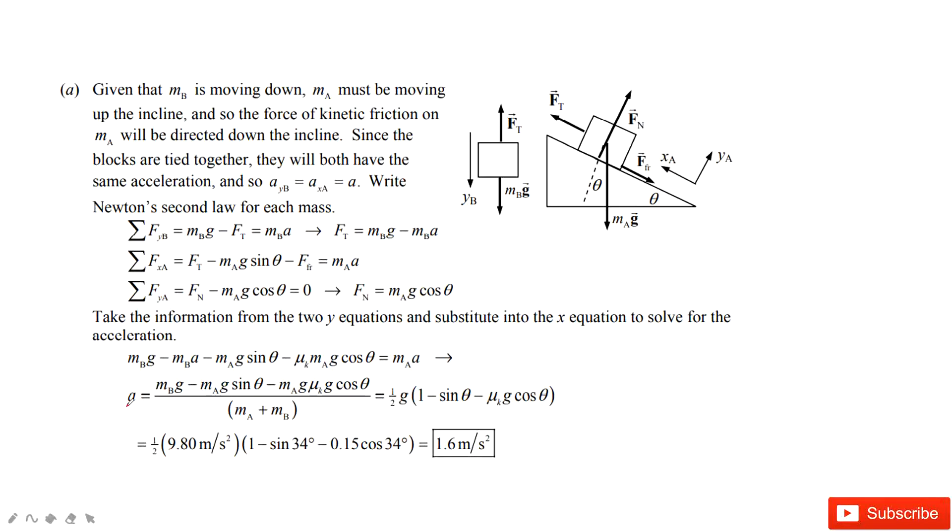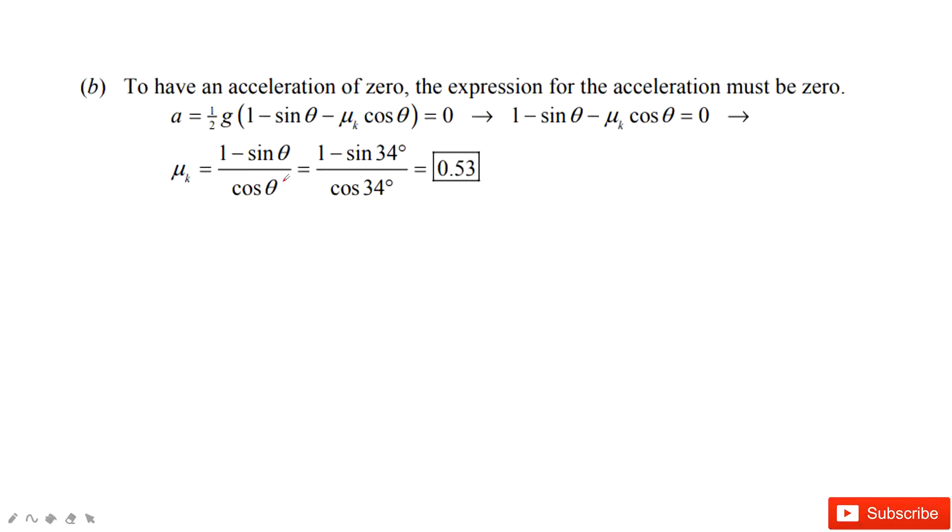when we solve the problem, we find acceleration is 1.6 meters per second squared after we input the known quantities. The second one, we make sure acceleration equals zero, so we get μ_k equals 0.53. Thank you.